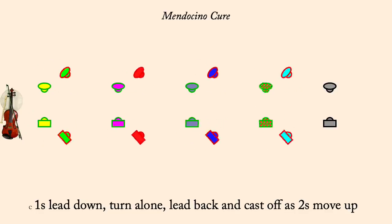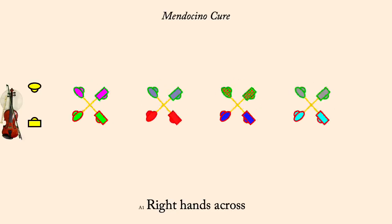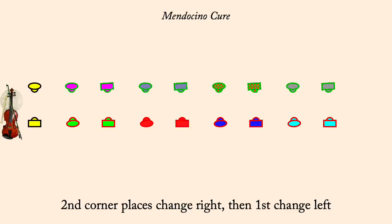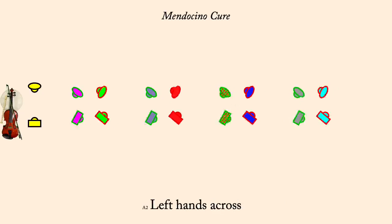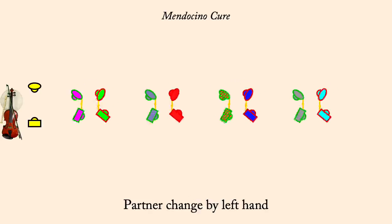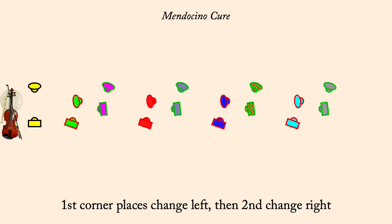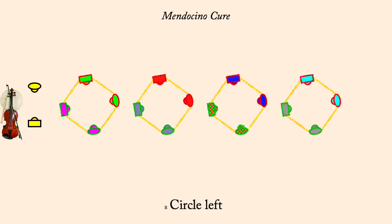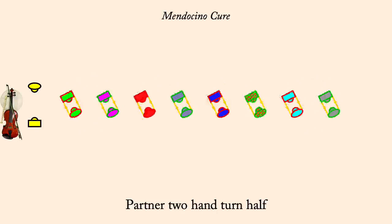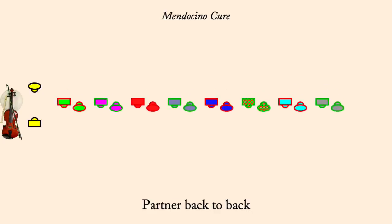Right hands across. Partner two-hand turn half. Partner back-to-back. Partner two-hand turn half.